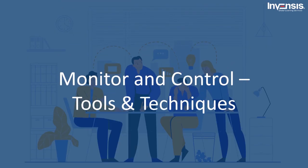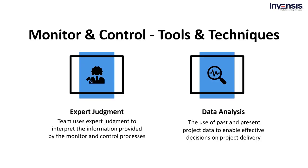Now let's talk about monitor and control process tools and techniques. To begin with, we have expert judgment. To ensure that the project's performance is as expected, the project manager and the project management team use expert judgment to interpret the information provided by the monitoring and control process. These expertise should be obtained from individuals or groups that specialize in earned value analysis, interpretation and contextualization of data, techniques to estimate duration and costs, trend analysis, technical knowledge of the industry and focus area of the project, risk management, and contract management.